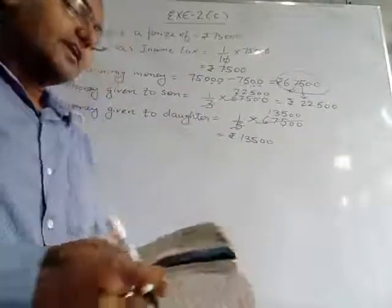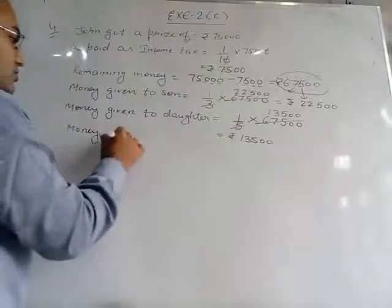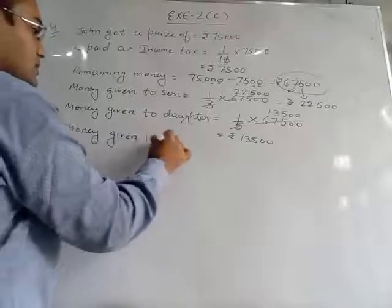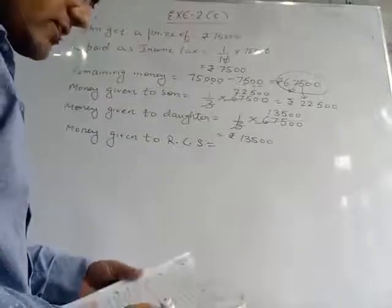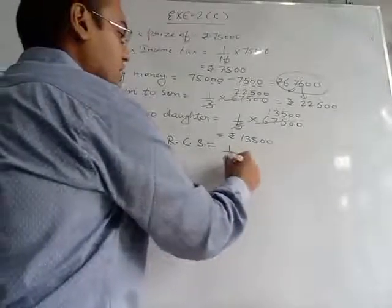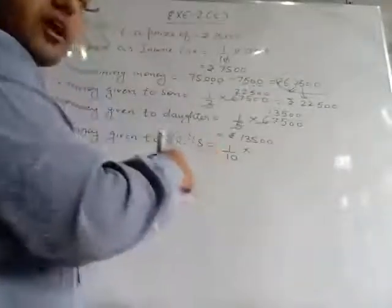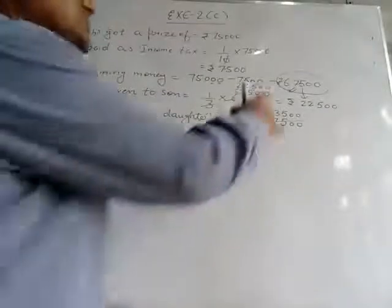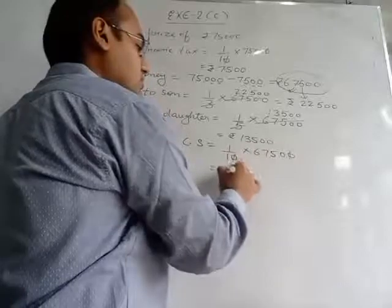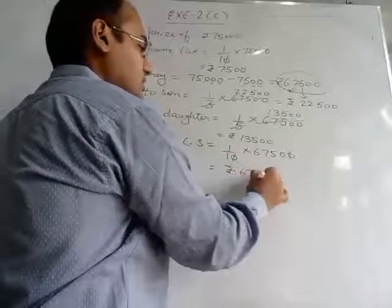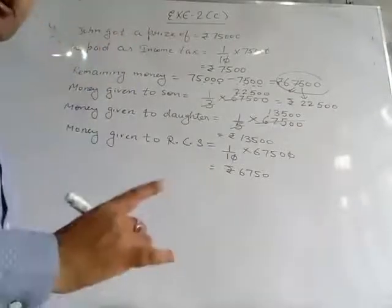He also gave 1/10 to the Red Cross Society. Since 1/10 is a fraction, we multiply 1/10 by 67,500. So 6,750 rupees he paid to the Red Cross Society.